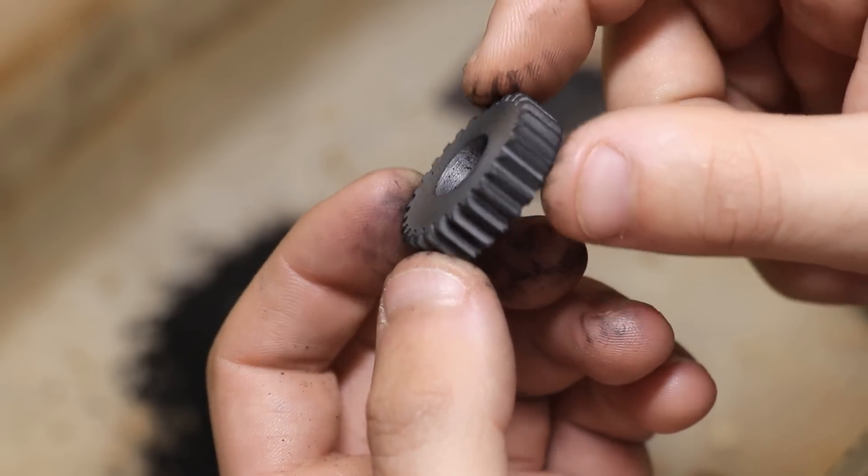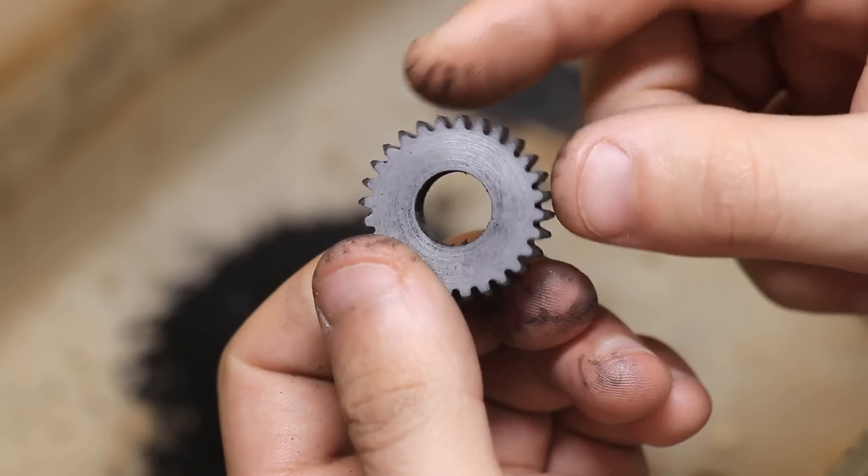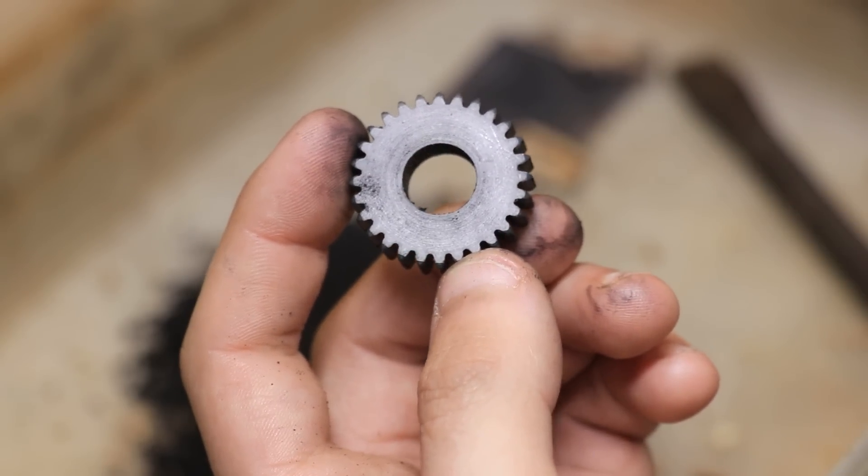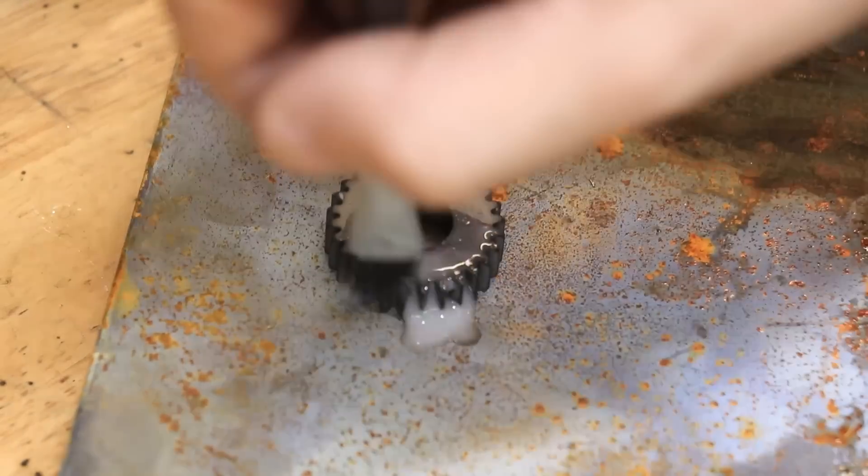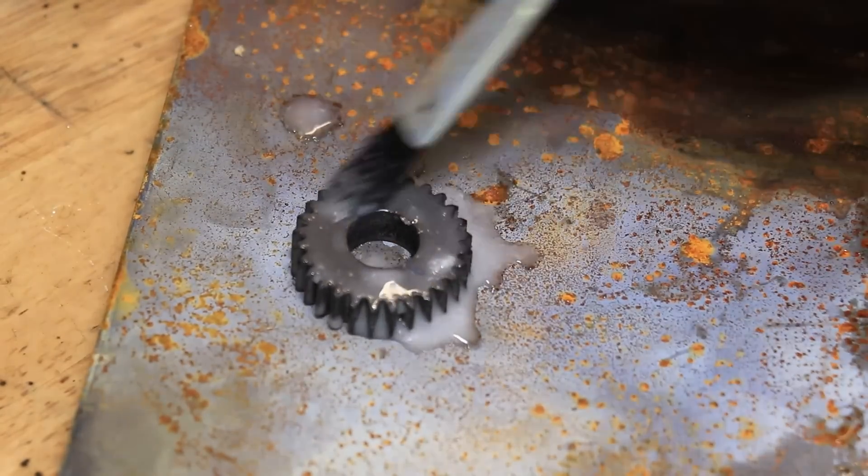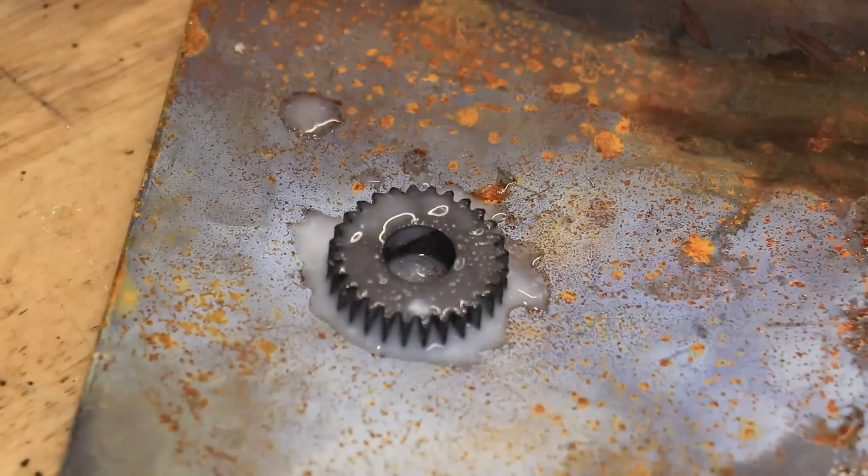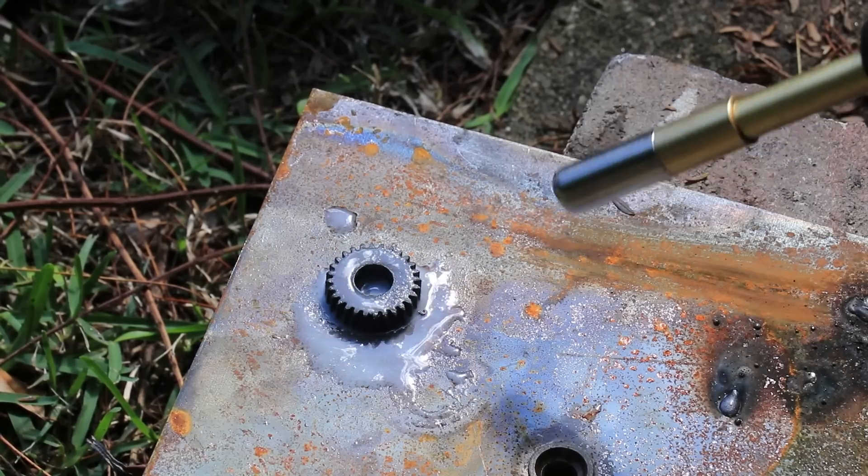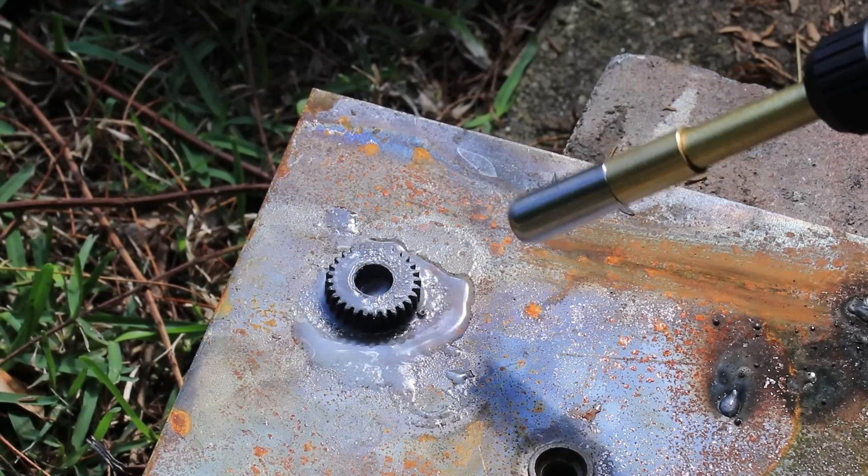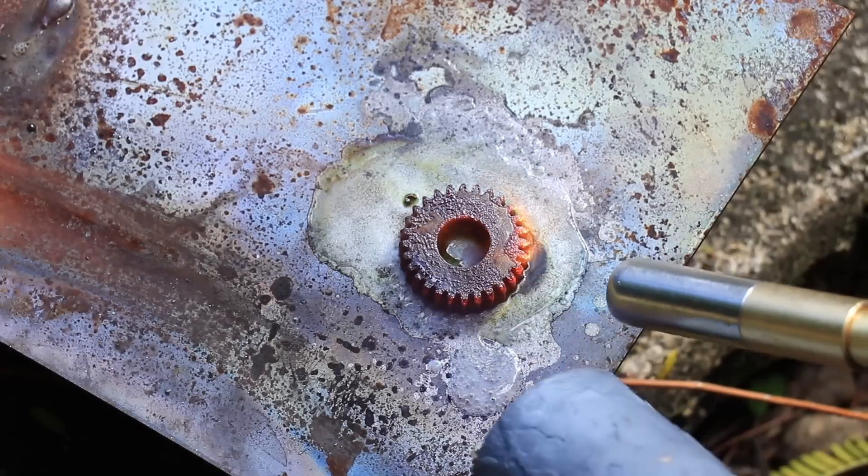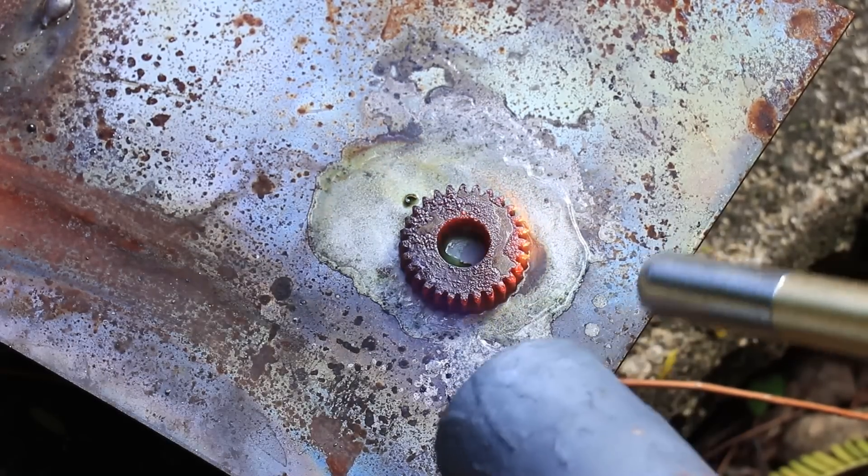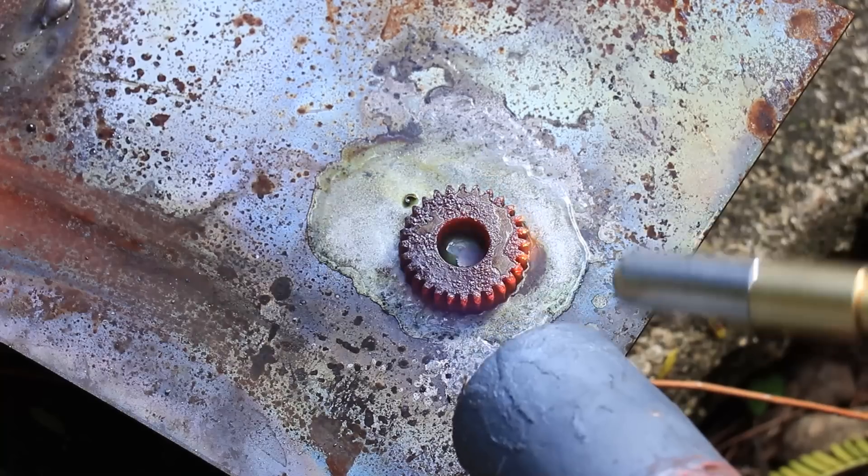We now need to harden the gear by quenching it, and this alloy specifically requires it to be quenched in oil. I'll first coat the part in a brazing flux to keep the scale from forming at high temperature. I'll heat the part up until it stops being magnetic. The flux can make it a bit difficult to see the color of the metal properly, so doing it this way makes it a bit easier to gauge the temperature.